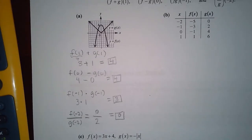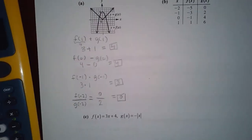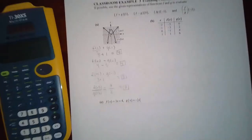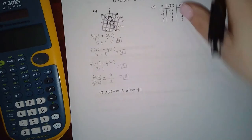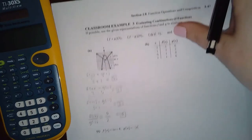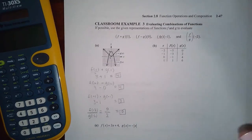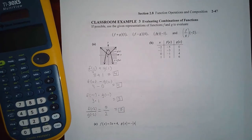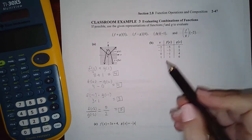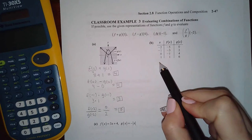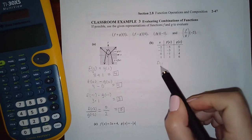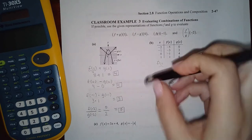We had to take a closer look at that one because the graph is so tiny. Now let's see how we do this when we're given a table. When given a table, it's the same thing — we're still finding f(1)+g(1), f(0)-g(0), f(-1)·g(-1), and f(-2)/g(-2).